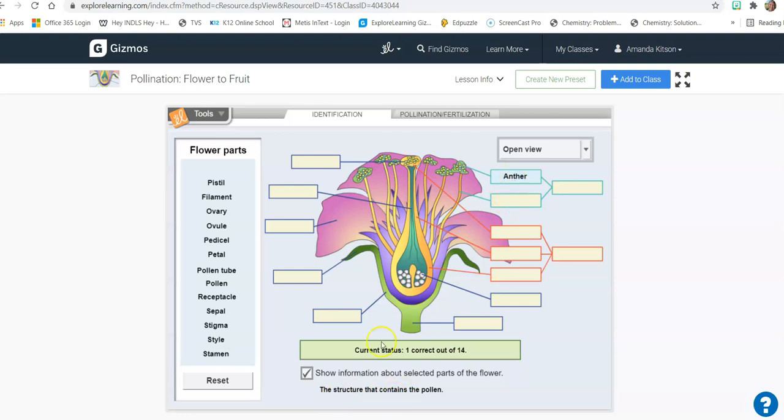So it says anther is the structure that contains pollen. So pollen, right, would be the little tiny yellow things on flowers that get stuck on bees. So then you go to the next one, put it in a box. I got it wrong. Put it over here and I got it right. And so it will tell you what this part of the flower does. This is the female reproductive system of the flower. It's called the pistil.